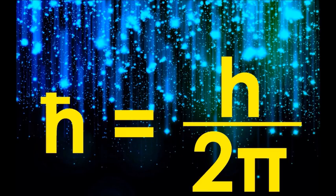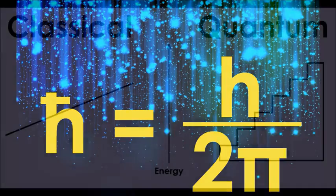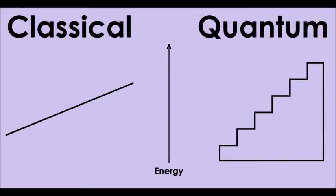Because this number is so small, we don't notice the effects of quantization in our everyday lives. When you zoom out and look at the staircase from the perspective of a human being, who regularly deals with ranges of energy considerably larger than the ones dealt with in quantum physics, the staircase looks like a ramp. This is what gives rise to the classical way of thinking.